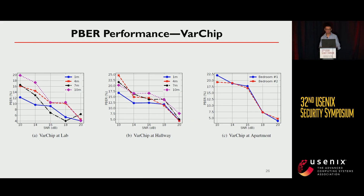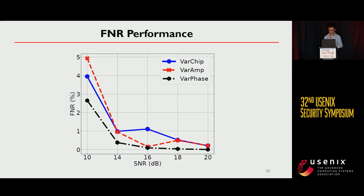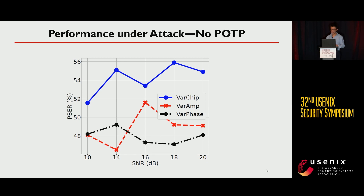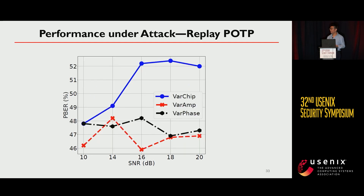For the PPER performance of our three schemes, as the SNR increases, the PPER decreases. For the FNR, a similar observation holds: as the SNR increases, the FNR decreases. We also evaluate performance under attack scenarios — when attackers have no POTP, use a fake POTP, or use a replay POTP — and our scheme can successfully detect the fake packages in all cases.